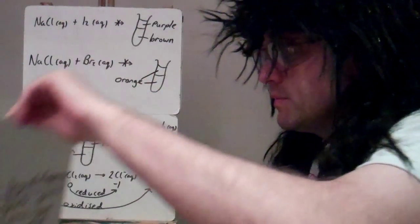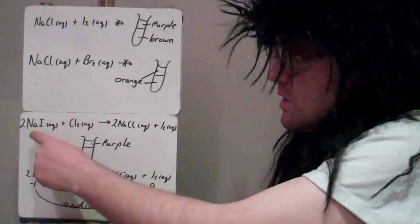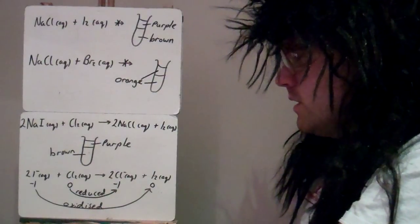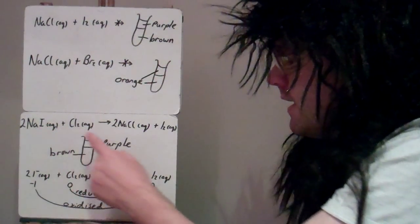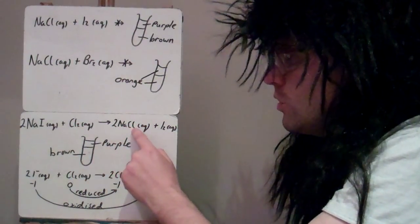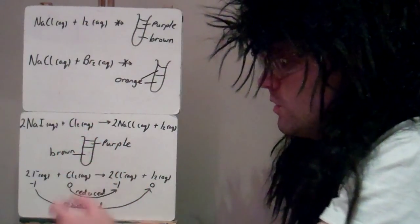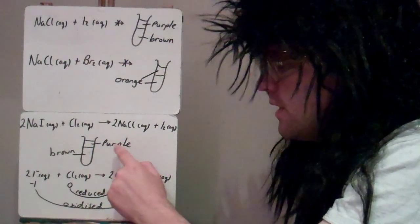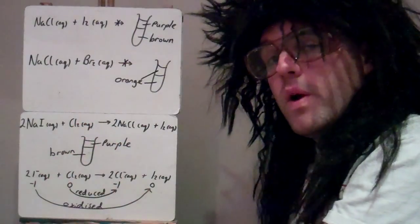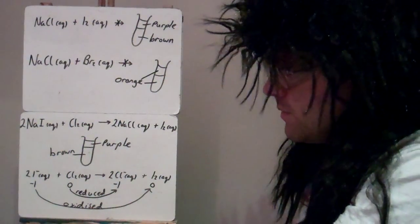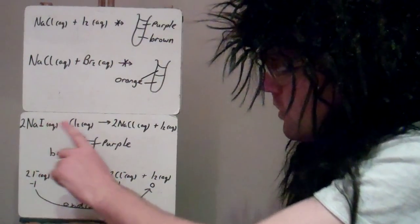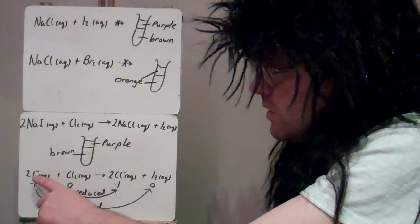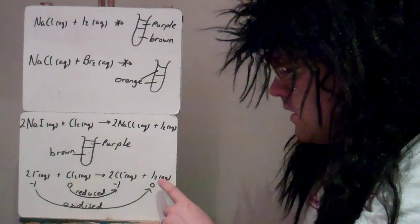Now let's look at examples where there are reactions. With sodium iodide and chlorine, chlorine is more reactive than iodine, so it oxidises the iodide to iodine. The iodide ends up as iodine and the chlorine is reduced to chloride — chlorine is acting as an oxidising agent. Because iodine has been produced, we see a purple layer on top in the cyclohexane and a brown layer in the aqueous layer. The ionic equation shows 2I⁻ + Cl₂ → 2Cl⁻ + I₂, removing the sodium as a spectator ion.